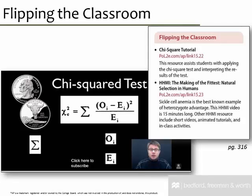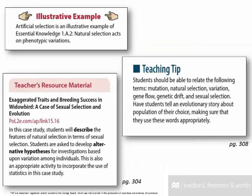With so much content to get through, we know the importance of flipping your AP Biology classroom, so we also provide you with links that help you do that. This Chi-squared video tutorial is great for students to watch at home, or assign it when you are out of class. Beyond those features, we also have illustrative examples that provide a call-out when there is an image that can be matched to a piece of the AP curriculum. Teaching use figures give you teaching advice on using the figures from your textbook in your classroom. We also call out when there are additional materials in your teacher resource flash drive, which we will now look at in more detail.